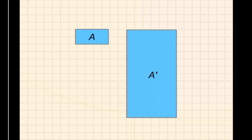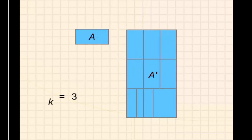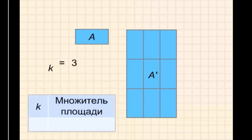Прямоугольники A и A' подобны. Самая длинная сторона большего прямоугольника равна 6, а соответствующая сторона меньшего прямоугольника равна 2. Таким образом, коэффициент подобия равняется 3. Давайте найдём, сколько маленьких прямоугольников можно поместить в большой прямоугольник. Это означает, что площадь фигуры A' в 9 раз больше площади фигуры A.